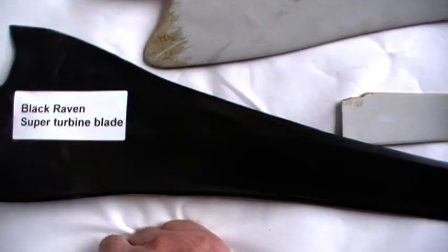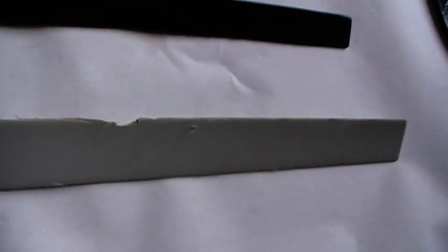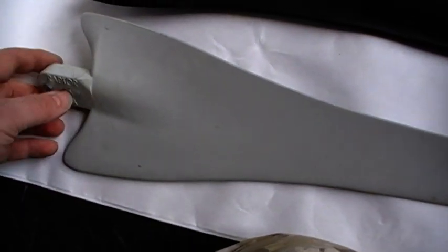This black raven blade will produce 2000 RPM and it will not break in wind. And this white blade will produce 600 RPM. Therefore, you can't get any power out of it.